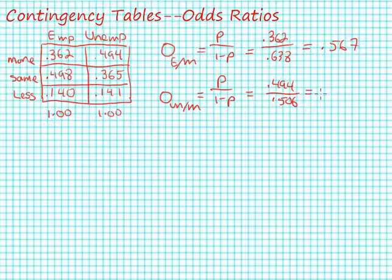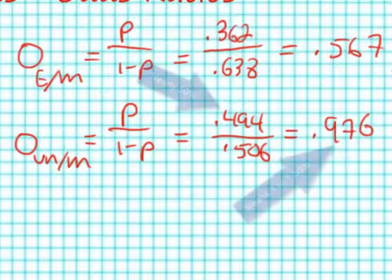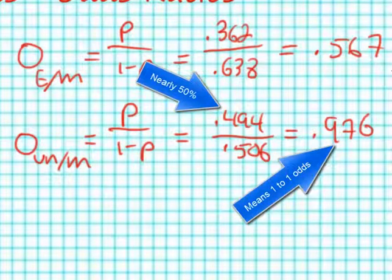That equals 0.976. Looking at these odds for a minute, we know that if it's a 50-50 probability, the odds are one to one. When we look at the unemployed people who believe there should be increased government benefits, that's nearly one-to-one odds—0.976 to one.